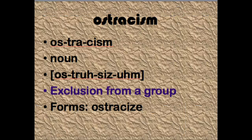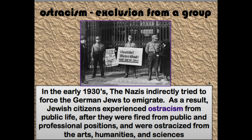Our next word is ostracism, and this is exclusion from a group. Someone might suffer from ostracism if another group or person ostracizes them, shuns them, or treats them like a pariah — one of our old words from early this year. In the early 1930s, the Nazis indirectly tried to force the German Jews to emigrate. As a result, Jewish citizens experienced ostracism from public life after they were fired from public and professional positions and were ostracized from the arts, humanities, and sciences.